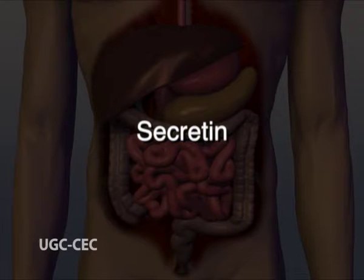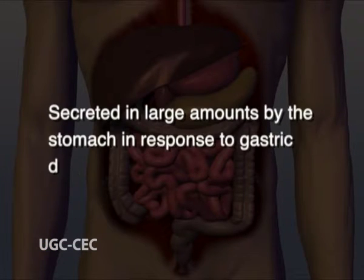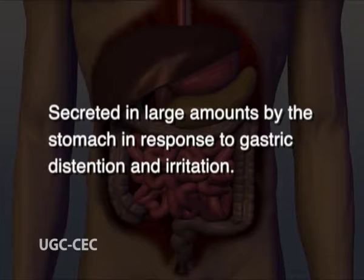Secretin: it is released by S cells of endocrinocytes located in the epithelium of duodenum. Secretin is secreted in response to chyme from the stomach and primarily stimulates production of aqueous sodium bicarbonate solution by pancreatic ductal cells. The enzymes secreted by acinar cells are then flushed out of the pancreas into the duodenum. Gastrin: this hormone is secreted in large amounts by the stomach in response to gastric distension and irritation. In addition to stimulating acid secretion by the parietal cells, gastrin stimulates pancreatic acinar cells to secrete digestive enzymes.